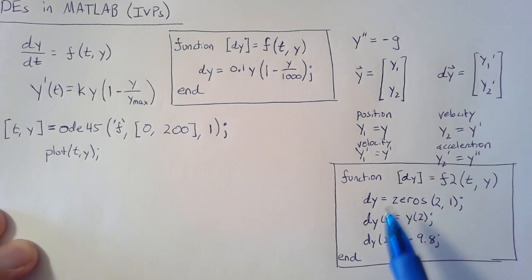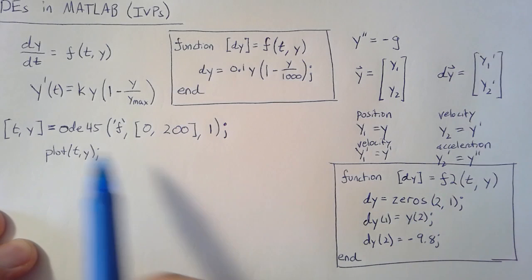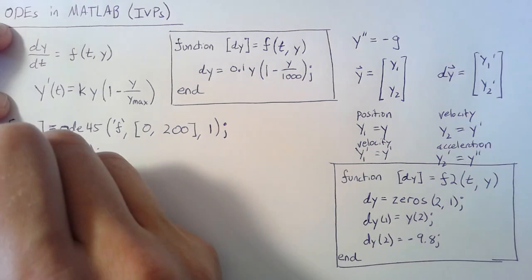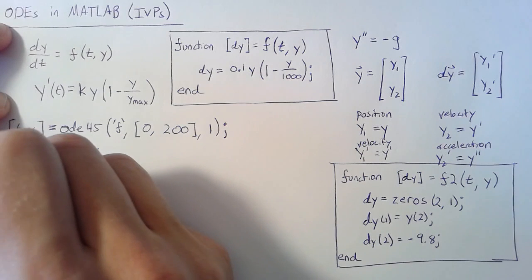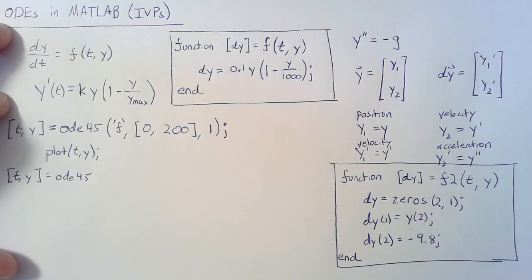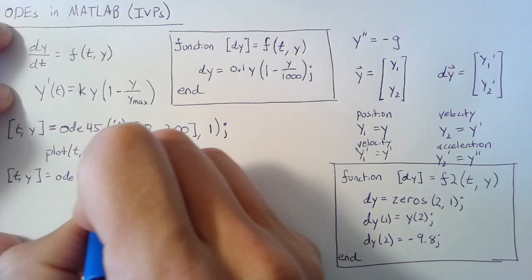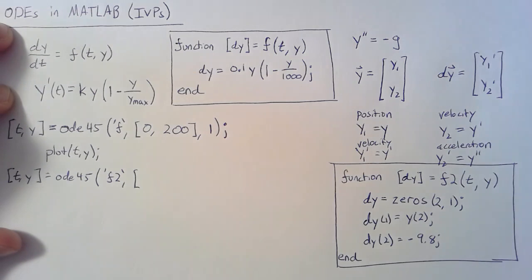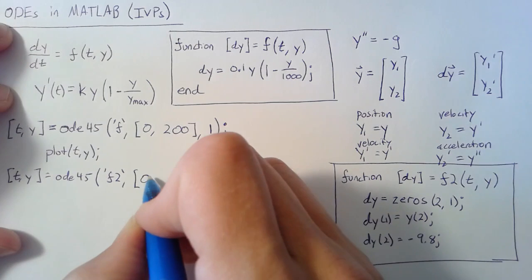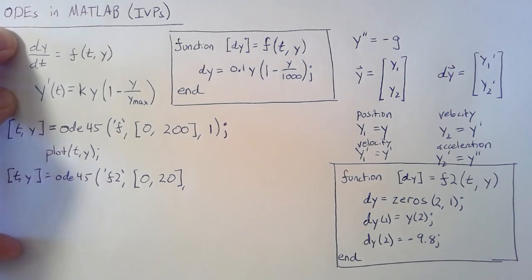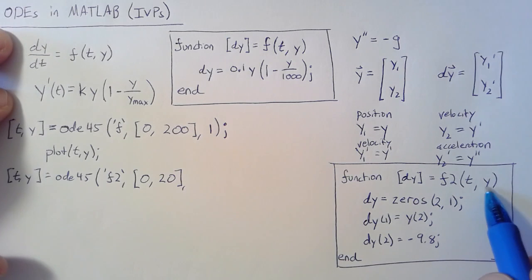So now the question is, how do we plug this into ODE45 so that we can do something useful with it? We use the same syntax as before: t, y equals ODE45. We'll put in the name of our function, which is f2. We need to give it some time to integrate over, so we'll integrate from 0 to 20.